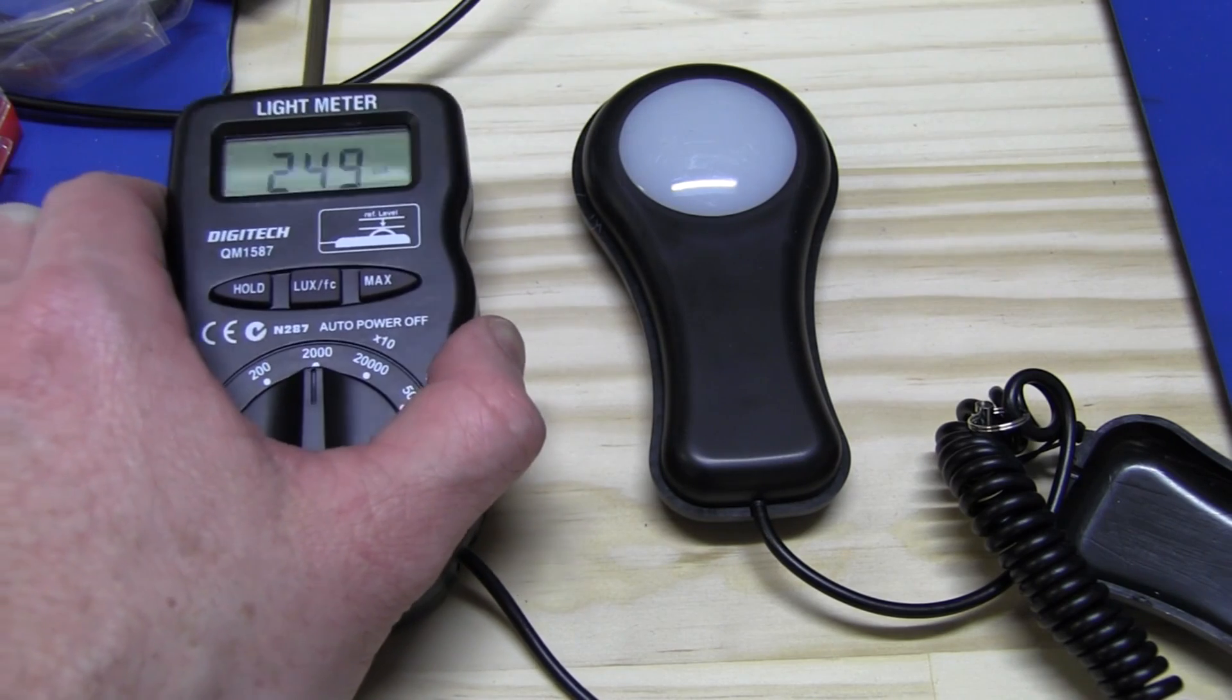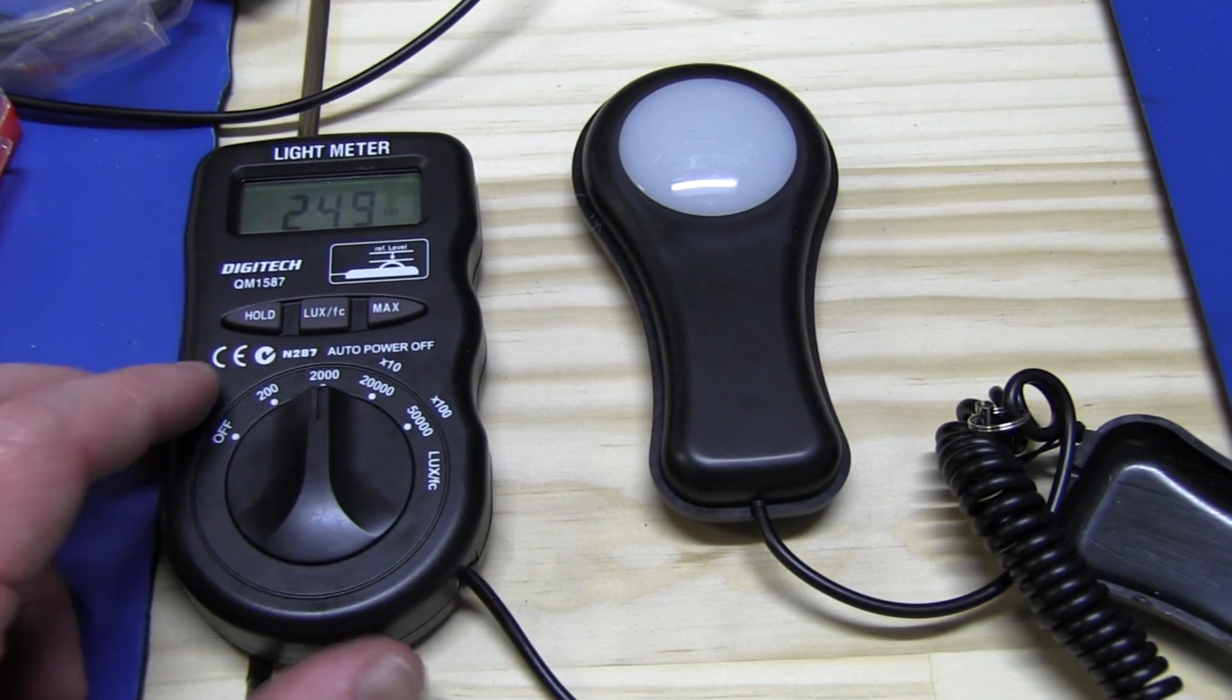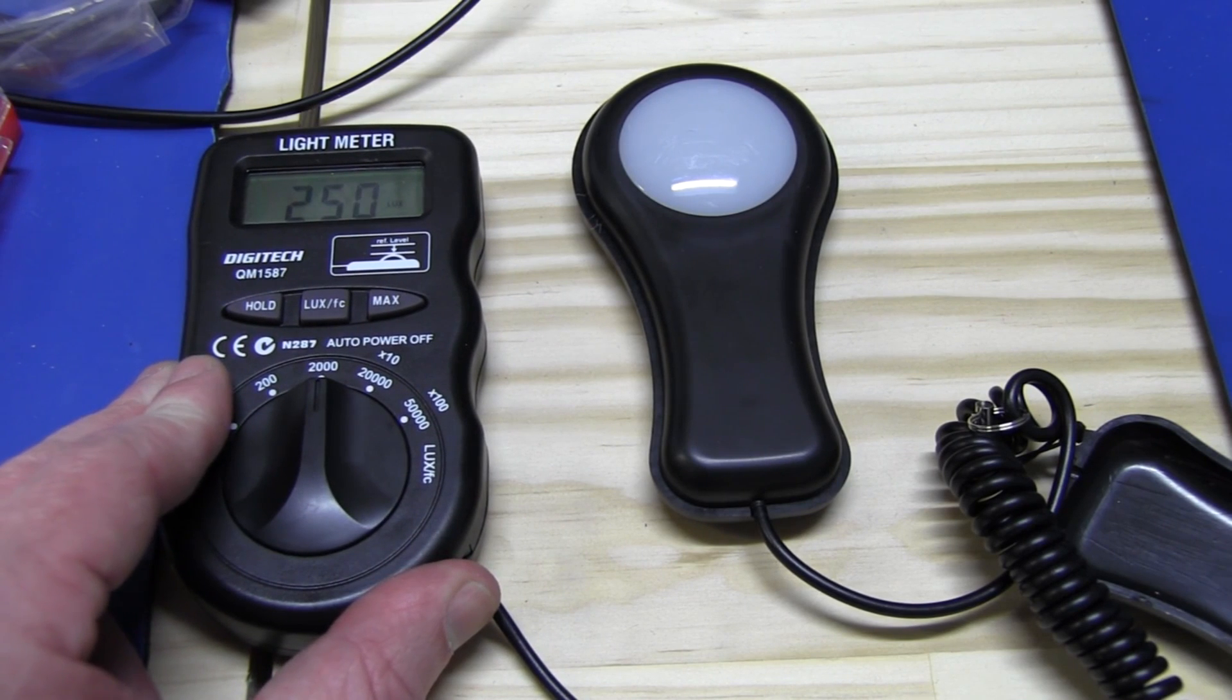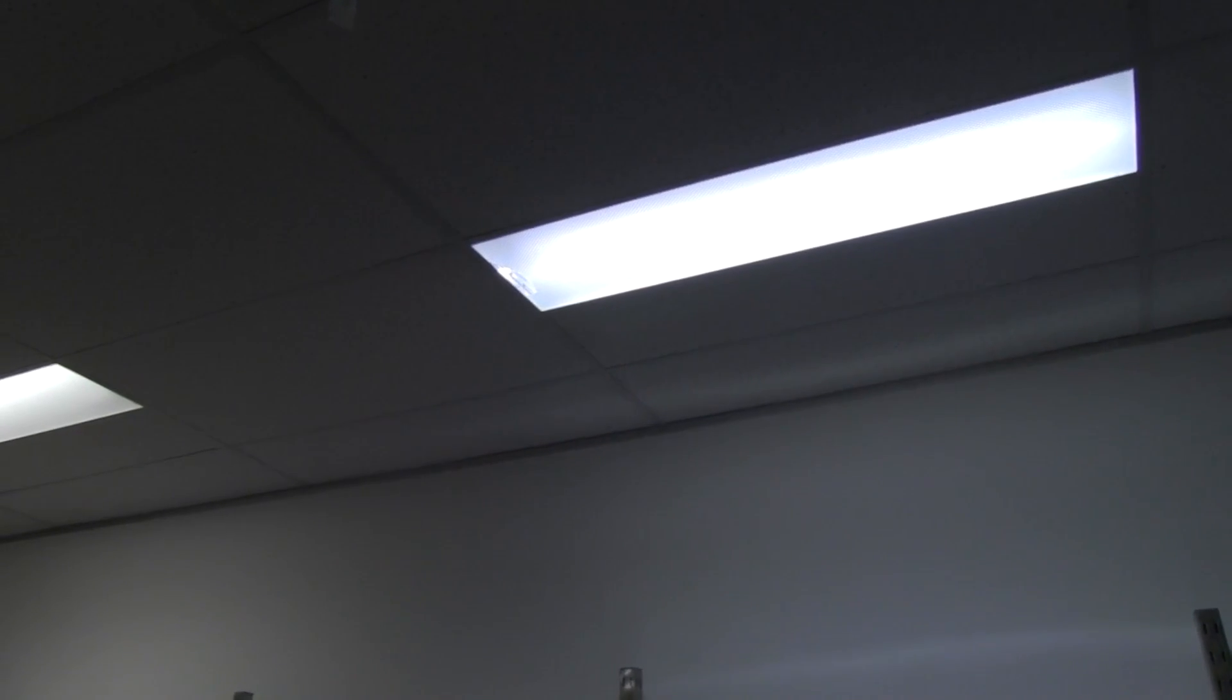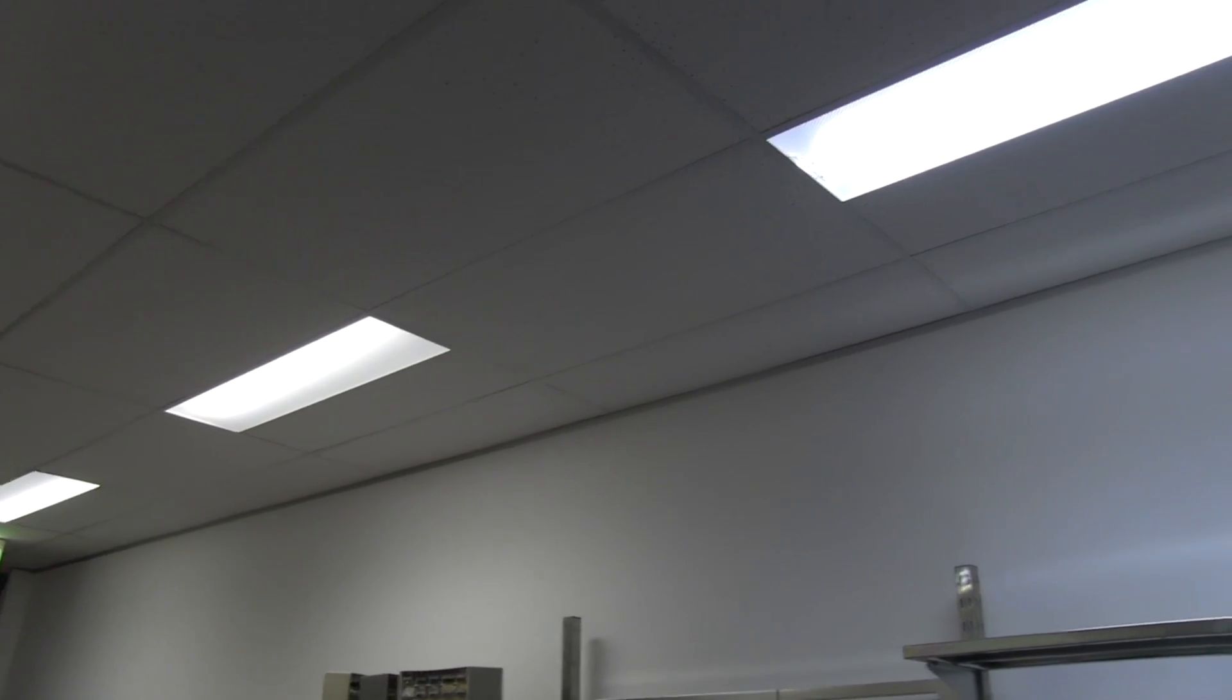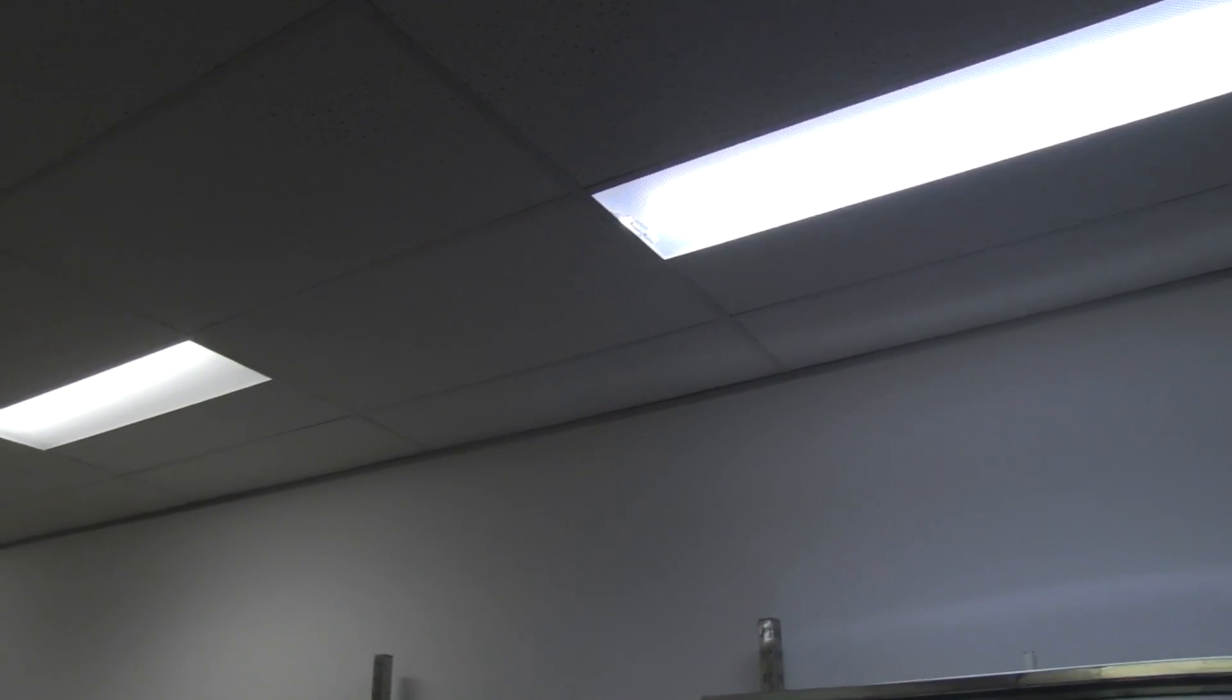And with the new NEC 5000 K globe in there, I get 246, 249. We're talking 250 odd lux. So that's a significant improvement, I think. And that's with the diffuser in place after it's warmed up. When it first turned on from cold, it started at about 180 lux. And then worked its way up to 250. And I have no idea if you're going to be able to see the colour difference here. But that's the new 5000 K one. And that's the older 4000 K ones installed. And the new ones are significantly whiter and brighter, as you'd expect. Because they're a higher colour temperature.